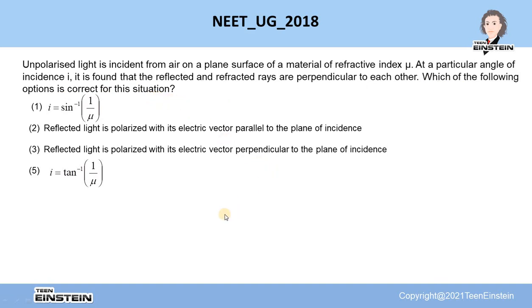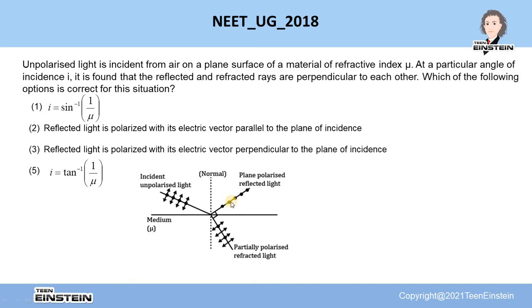So to solve this problem, let us discuss the situation once again from this figure. We know that unpolarized light has two types of electric vectors.